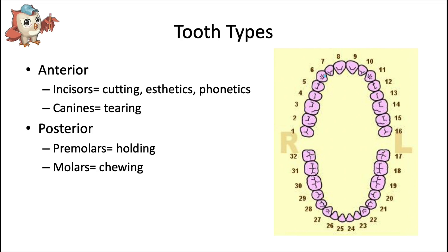The anterior teeth are the front six teeth in both arches; the posterior teeth are all the teeth behind those, again in both arches. Incisors are the front four teeth, used for incising or cutting food. The upper incisors are arguably the most important teeth for smile aesthetics and also serve a function in phonetics, producing F and V sounds when they touch the lower lip.